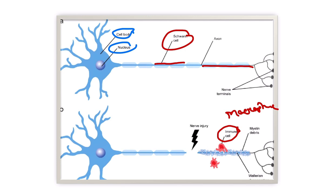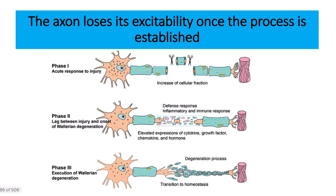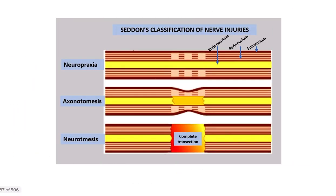When the distal part of the neuron is separated from the proximal part, the distal part is eaten up by macrophages — this is known as Wallerian degeneration. Another picture shows the same type of injury, with increased cellular infiltration, and different phases showing the distal axon segments being destroyed in this process.